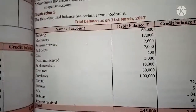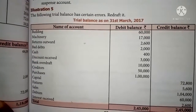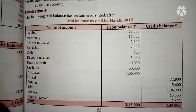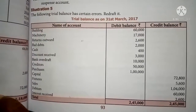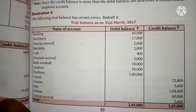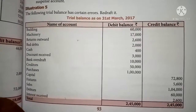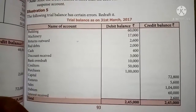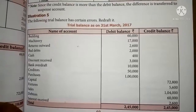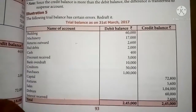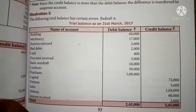Next, illustration 5. In this example sum, they are asking: the following trial balance has certain errors — redraft it. So they are giving you a trial balance which, if you go through it, appears tallied at 2,45,000 each side, but all the information written in the debit column and the credit column is not correct — some errors are there. You can identify the mistakes, write the amount in the correct column, then re-total the trial balance. If it still does not tally, write the difference as suspense account.